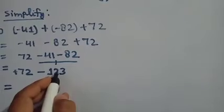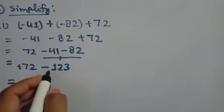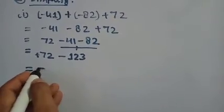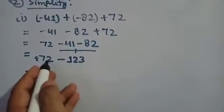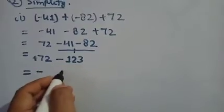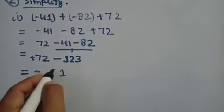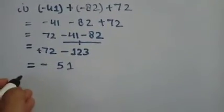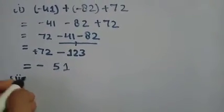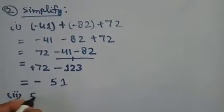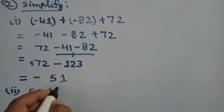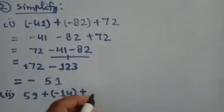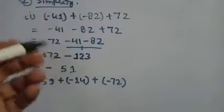Now there is one positive and one negative integer, so there will be subtraction, and the sign of the greater number is used. The greater is 123, so put a minus sign and subtract 72 from 123: 3 minus 2 is 1, and 12 minus 7 is 5. So minus 51 is the correct solution.